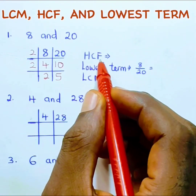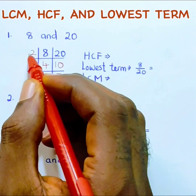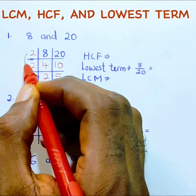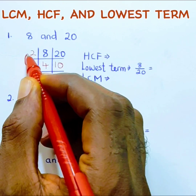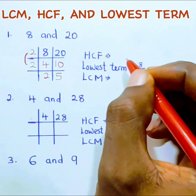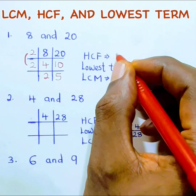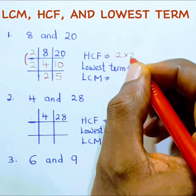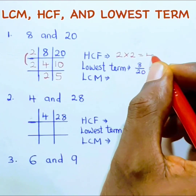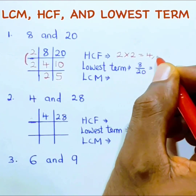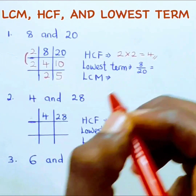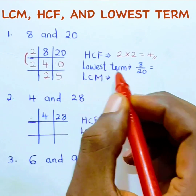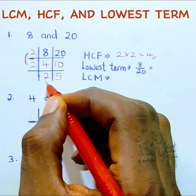For the HCF, we multiply the divisors used: 2 times 2 equals 4, so our HCF is 4. Our lowest term is 2 over 5.